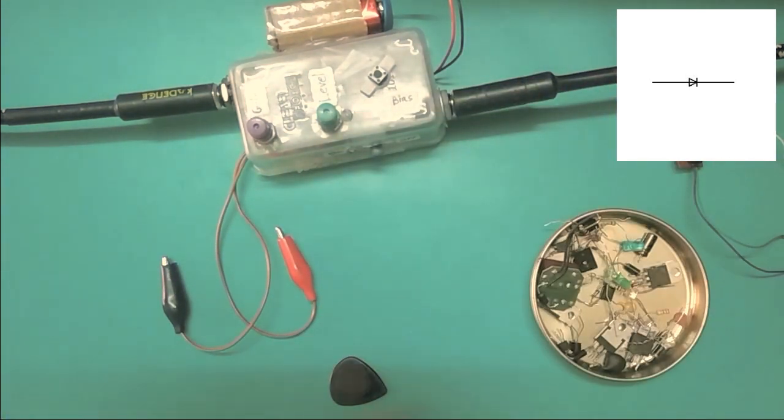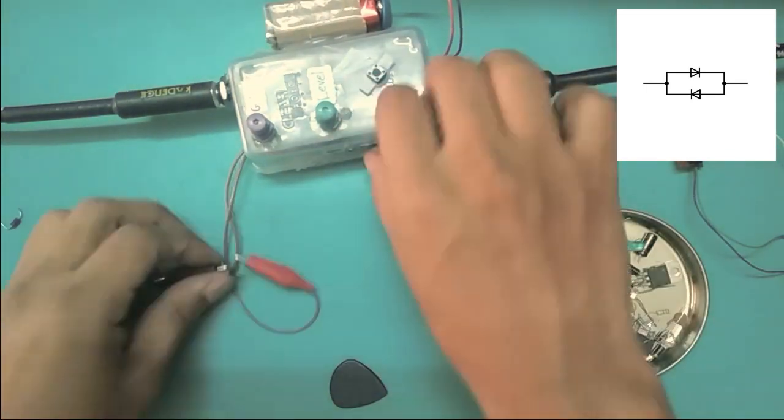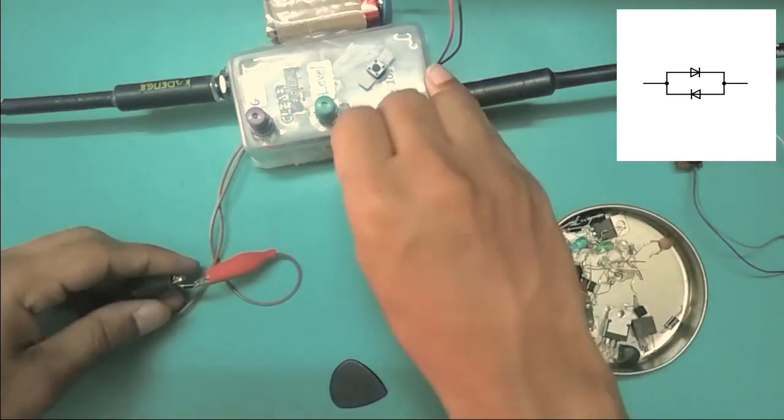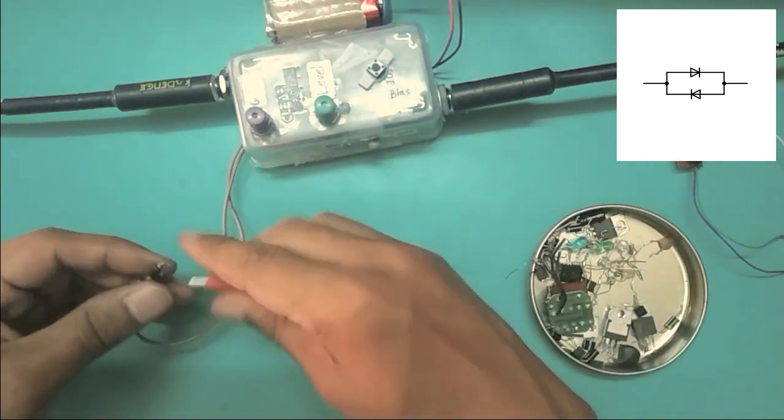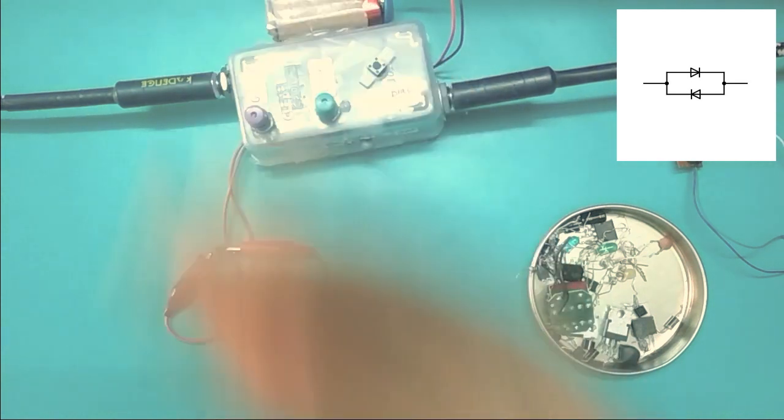So the next logical step is to have two diodes with opposite polarities, and so that's what I'm doing here. I just have two rectifier diodes, one from red to black, one from black to red.